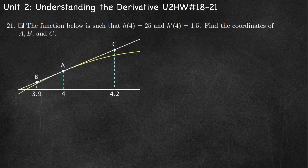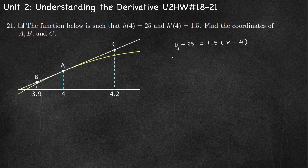Number 21: the function has h of 4 equals 25 and h prime of 4 equals 1.5. Find the coordinates of points a, b, and c, which all lie on the tangent line to the curve at x equals 4. The tangent line in point-slope form is y minus 25 equals 1.5 times (x minus 4). In local linearization form: L of x equals 25 plus 1.5 times (x minus 4). Point a has coordinates (4, 25), which was given.